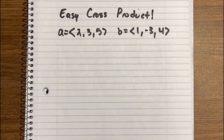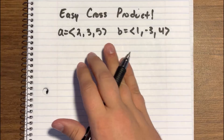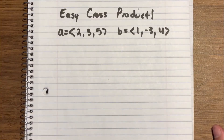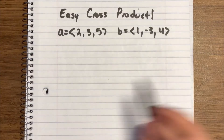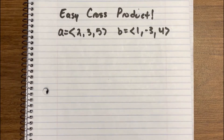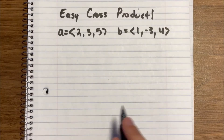Hey guys, it's Matt. Today I want to show you guys a really easy way to do vector cross products. This is the way that I learned how to do it — it's like a shortcut. Instead of drawing the whole determinant of a matrix, which is a pain and takes so much time, this is a nice little shortcut to make it take a couple less steps and make it really simple.